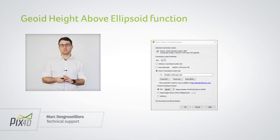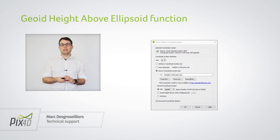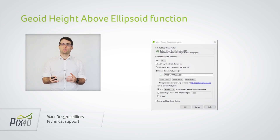In PIX4D software it's possible to choose which vertical coordinate system you're going to use in your project. To do so, go to the coordinate system window and make sure that the advanced checkbox is ticked. Then you can choose between several geoid models or you can choose an automatically selected ellipsoid.